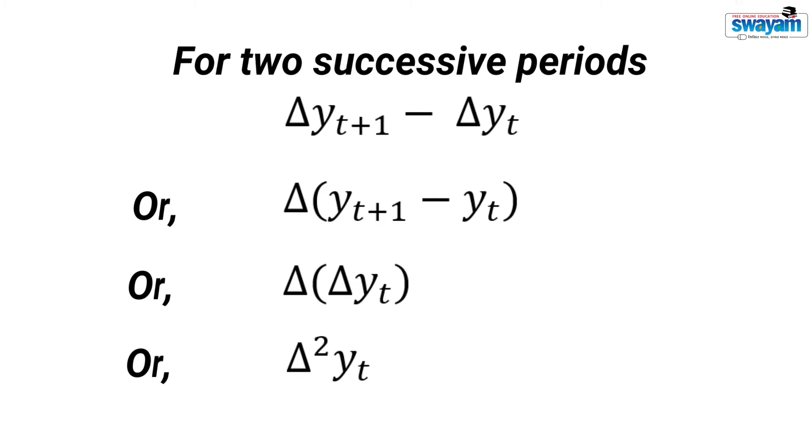After simplifying we get delta square yt. This is called the second difference.